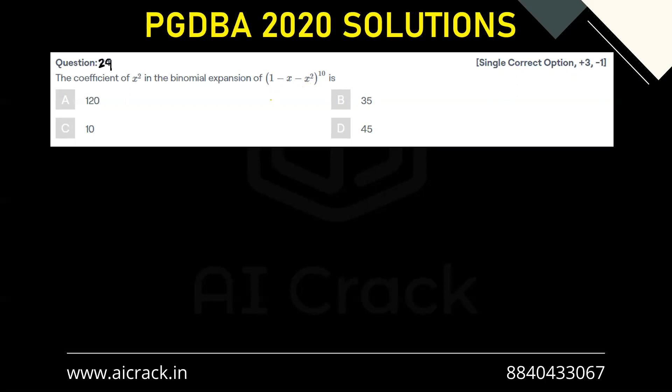So this is a very standard problem of multinomial theorem. Multinomial theorem says if we have x plus y plus z raised to the power n, then what we'll be doing,